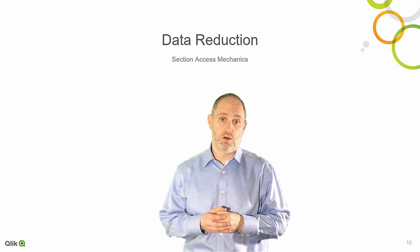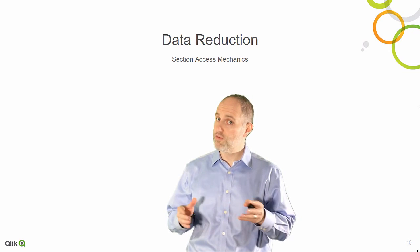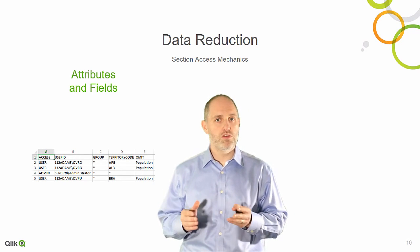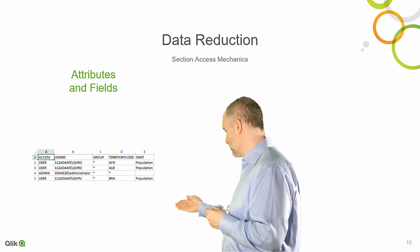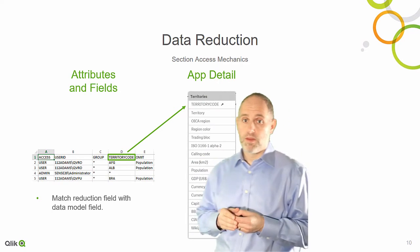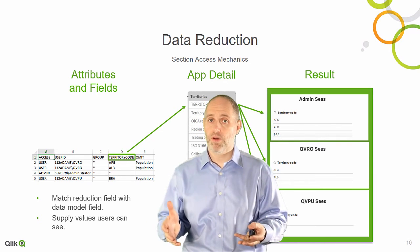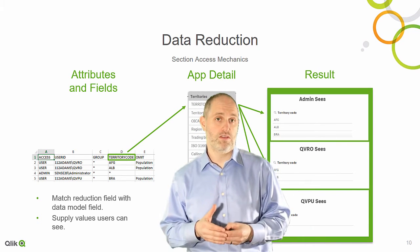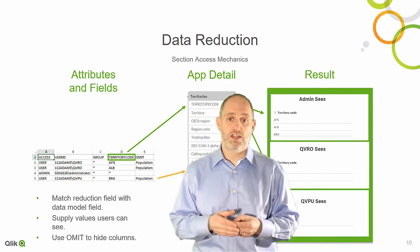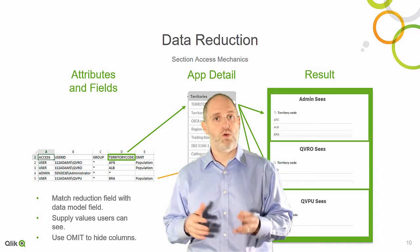The way data reduction works is through the Section Access Table. This table sits in the Qlik application, hidden from view, and controls access to data within the application. When the user enters the app, their user ID is checked against this table and associated with the reduction field. This reduction field is matched with a field in the application data model. The matching values in the reduction field are supplied to the application data model and the app responds by displaying only the data that the user is allowed to see. To omit columns from view, an omit field is in the Section Access Table and takes a field name, hiding that field from the user so they are unable to see it or interact with it.